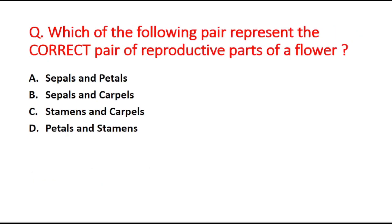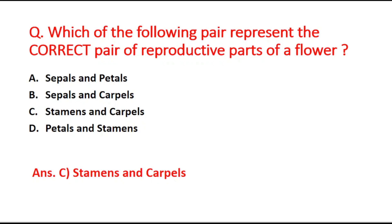Next question: which of the following pairs represents the correct pair of reproductive parts of the flower? Option A is sepals and petals, option B is sepals and carpels, option C is stamens and carpels, and option D is petals and stamens. The right answer is option C, stamens and carpels. Stamen is the reproductive part of the male flower and carpel is the reproductive part of the female flower.